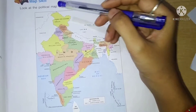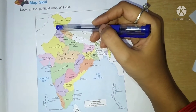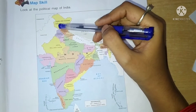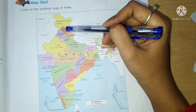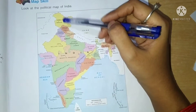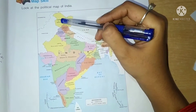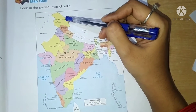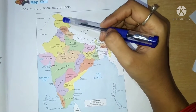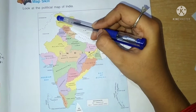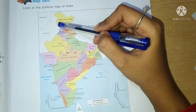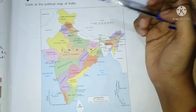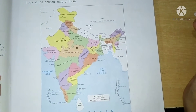This is the old map in which this complete area is of Jammu and Kashmir. But actually, Jammu and Kashmir is divided into Jammu and Kashmir and Ladakh. Now the new map of India is divided into Jammu and Kashmir and Ladakh — I'll show you in chapter number 3 or 4.